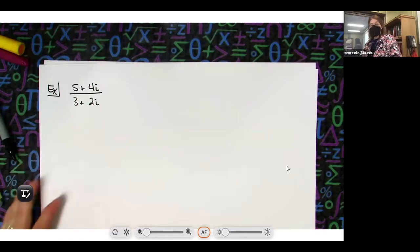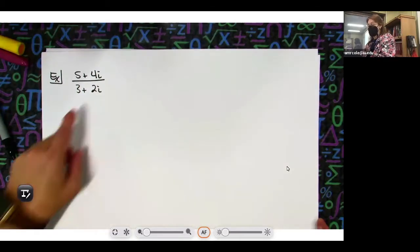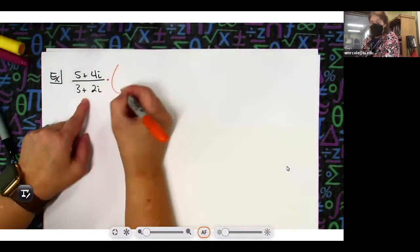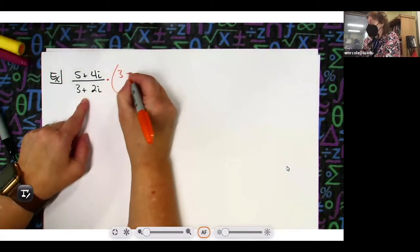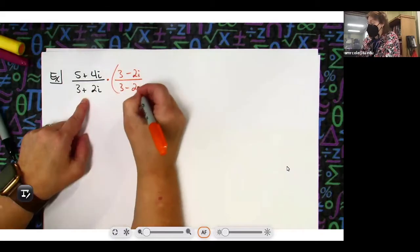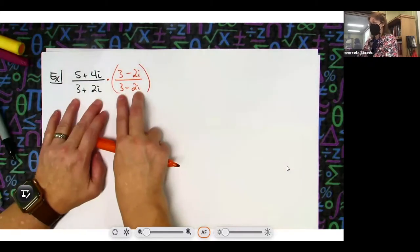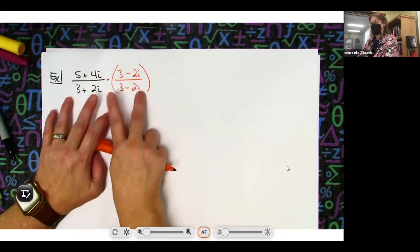The reason I'm choosing an opposite sign is because I'm trying to force the difference of two squares on the bottom. So I'm going to multiply by 3 minus 2i, 3 minus 2i. I do that so I can create the bottom and just foil the first one for the second one.